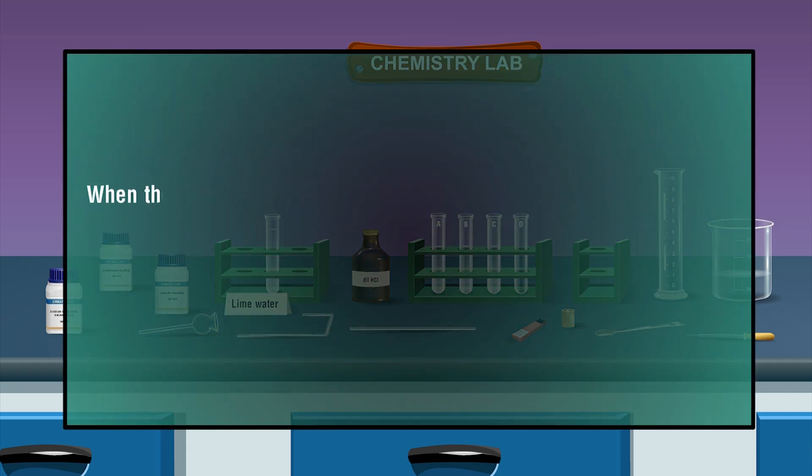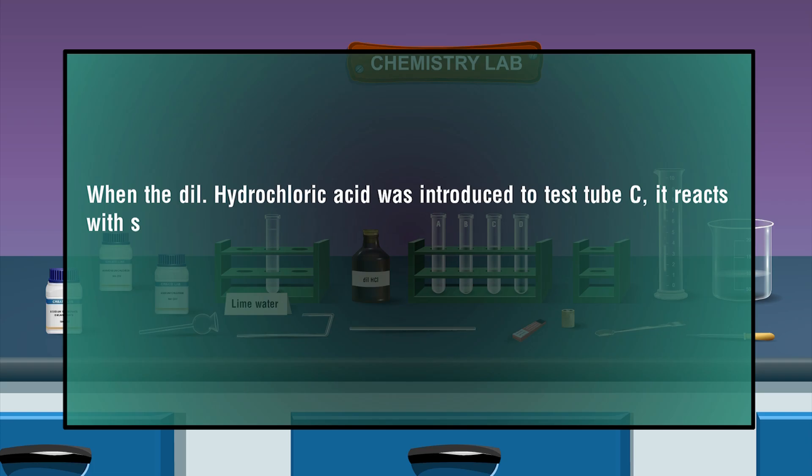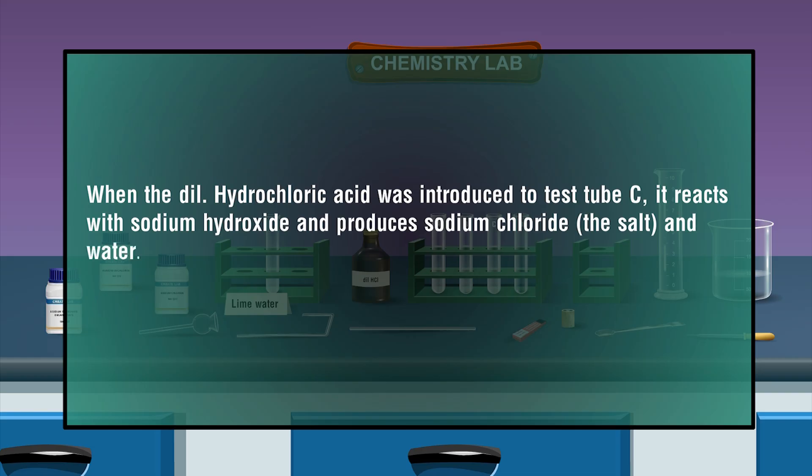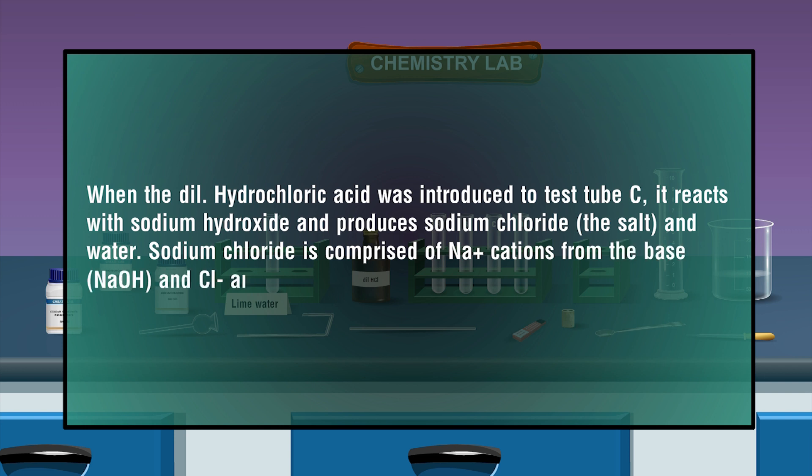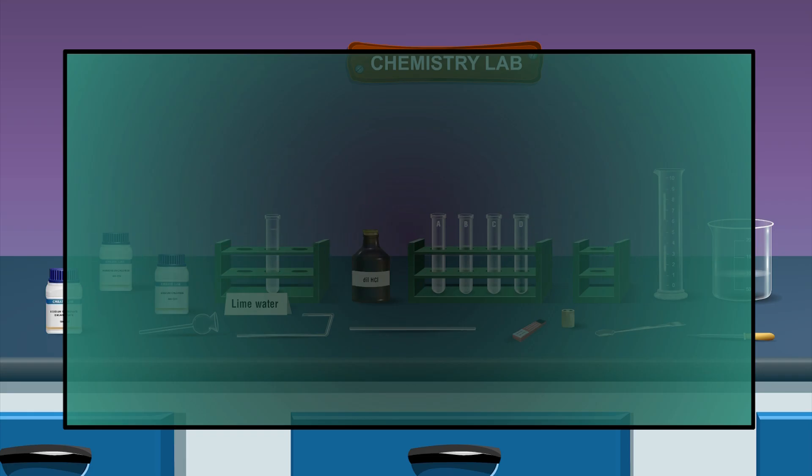When the dilute hydrochloric acid was introduced to test tube C, it reacts with sodium hydroxide and produces sodium chloride, the salt, and water. Sodium chloride is comprised of Na+ cations from the base NaOH and Cl- anions from the acid HCl. HCl plus NaOH gives H2O plus NaCl.